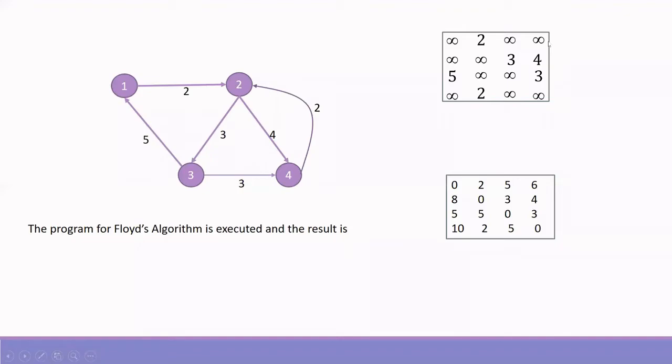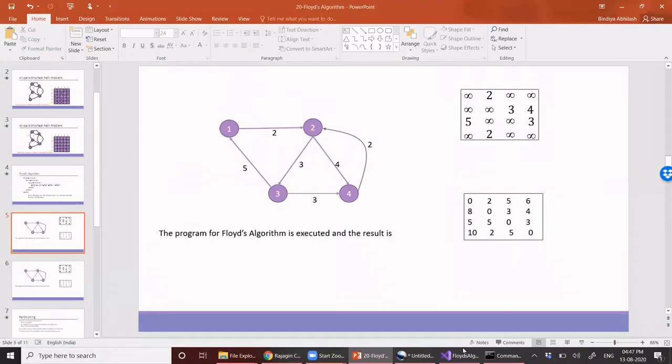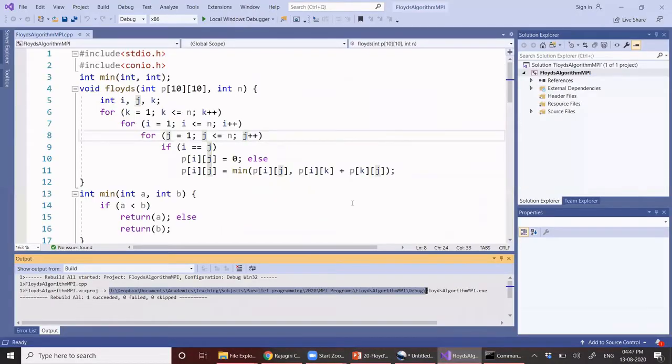We will try to execute Floyd's algorithm, the normal Floyd's algorithm using this simple graph given here. There are four nodes and we have the weights given here. So this will be the initial adjacency matrix. So what we are going to do is we will execute this Floyd algorithm. So you can see the implementation here. We have the nested loop here for three nested loops and the assignment statement. So let's execute this.